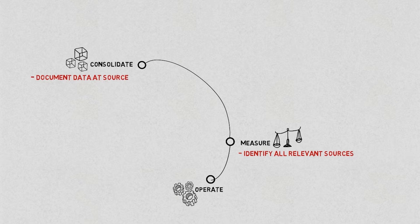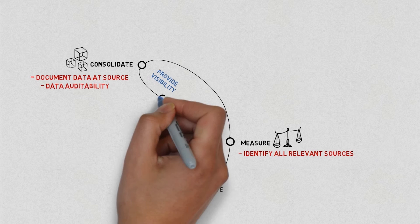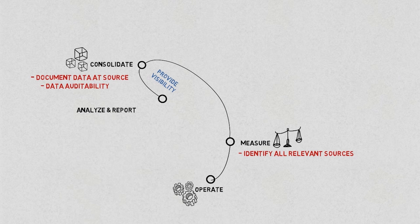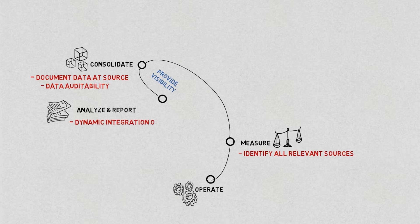As data is consolidated, re-engineering teams document data at source and they also document the transformations that the data undergoes. This documentation ensures data auditability back to the source systems. To enable data analysis, simple purpose-built applications are built using scripts which allow dynamic integration of data and data scientists run relevant analytics.